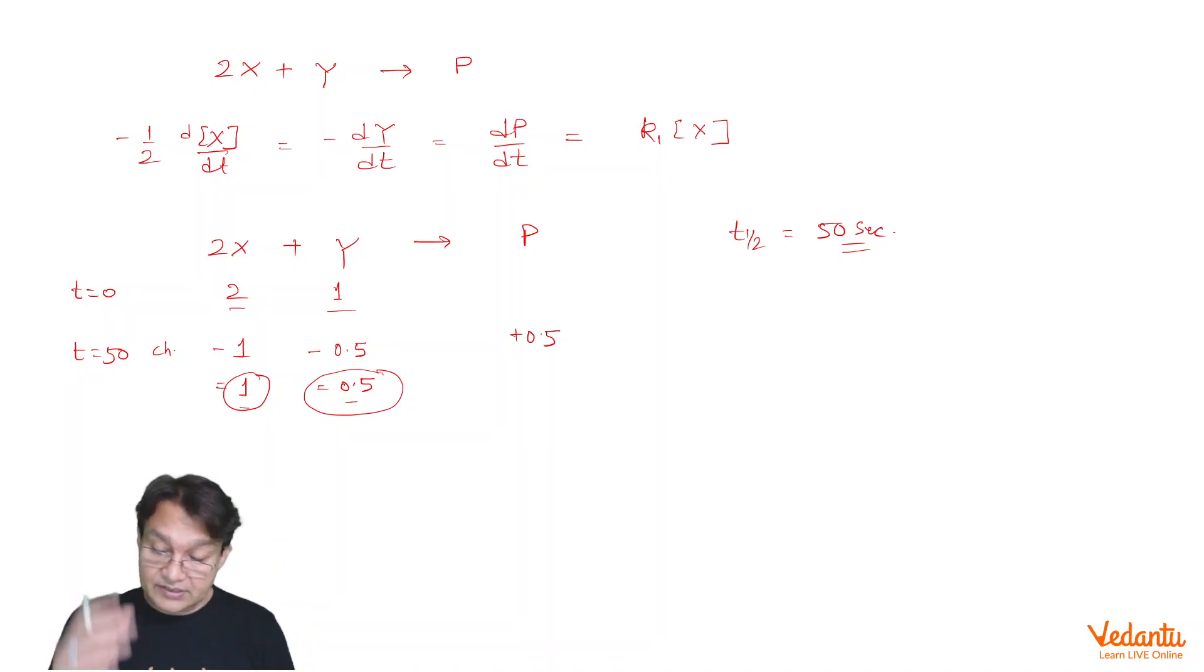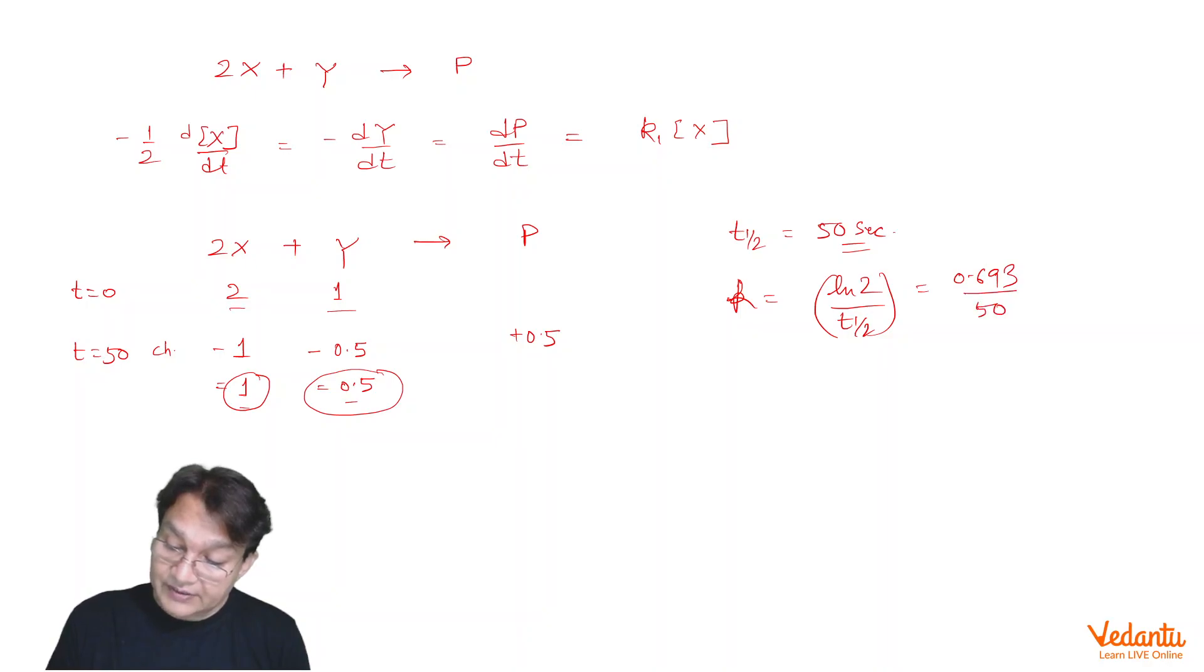Now, if t_half is 50 seconds, can we find out the rate constant of the reaction? Of course, rate constant of the reaction. k is equals to, for first order process, ln 2 by t_half. So this is k equals ln 2 by t_half, which is coming out to be 0.693 upon 50 seconds. But here is a catch.